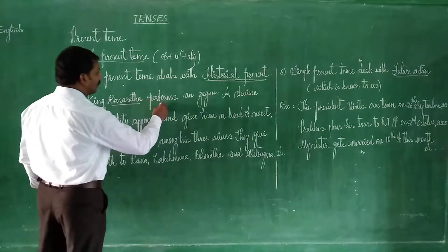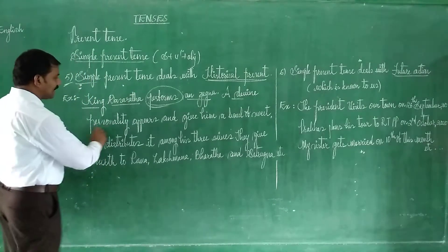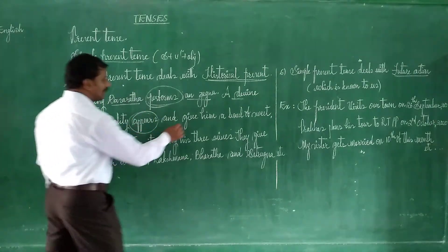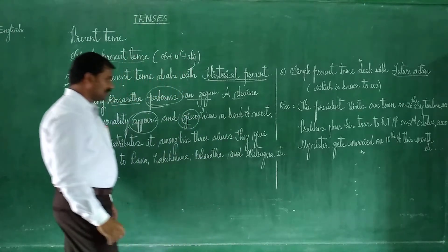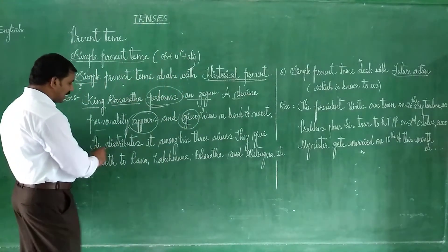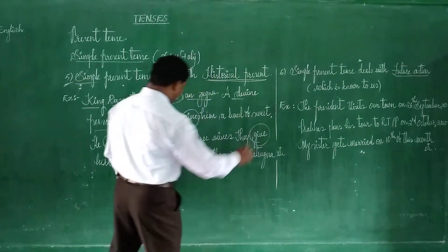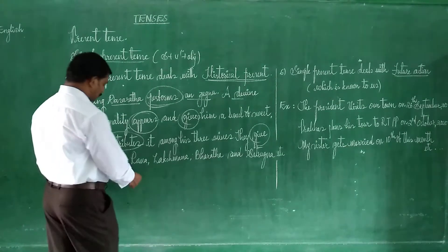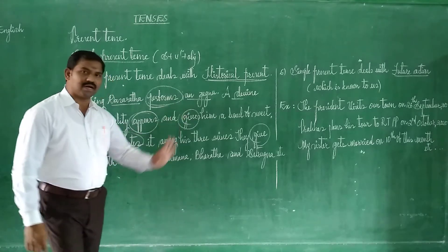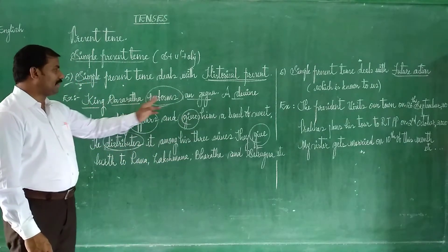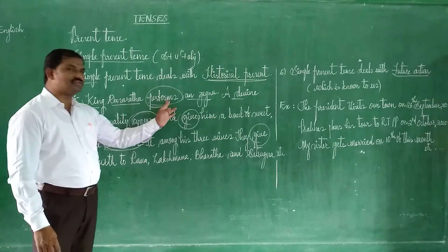So let's first see. King Dasharatha performs an yajna. A divine personality appears and gives him a bowl of payasam. He distributes it among his three wives. So that means subject is singular, that's why we have a singular verb here.